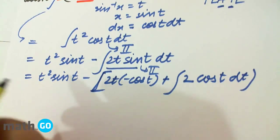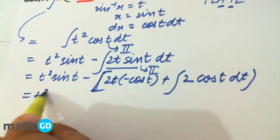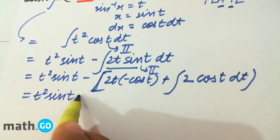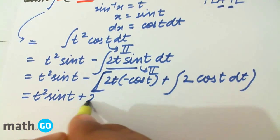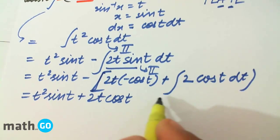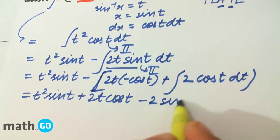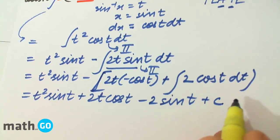Okay? Solving it further, plus 2t cos t, minus cos t integral is sin t, so minus 2 sin t plus c.